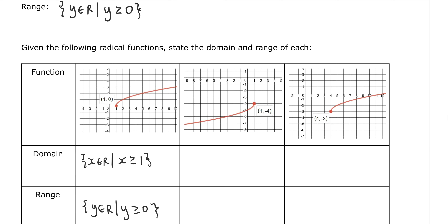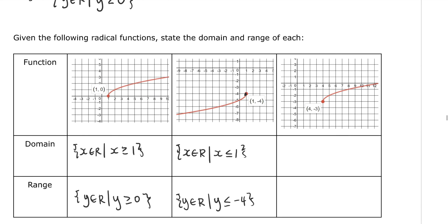For the next example, the square root function has been reflected the other way. It starts at (1, −4), so the domain starts at 1, but we're going below — not above — 1. The domain is x ≤ 1. For the range, y is every real number such that y ≤ −4. You can see the graph starts at −4 and all y values are below −4 as you go to the left.